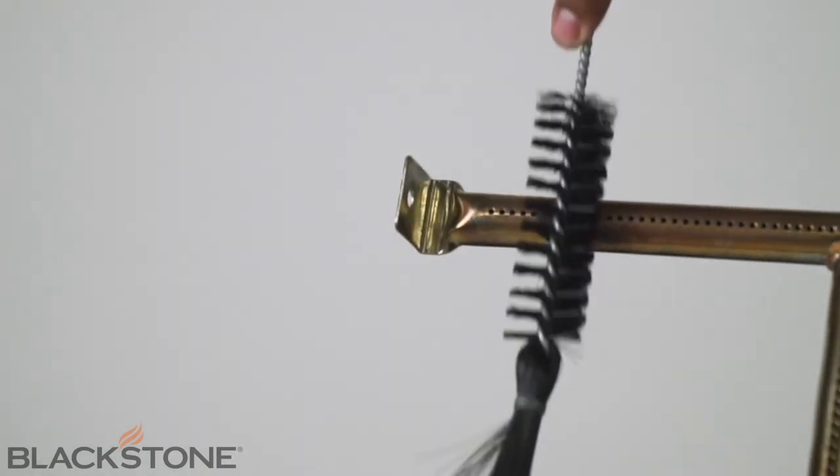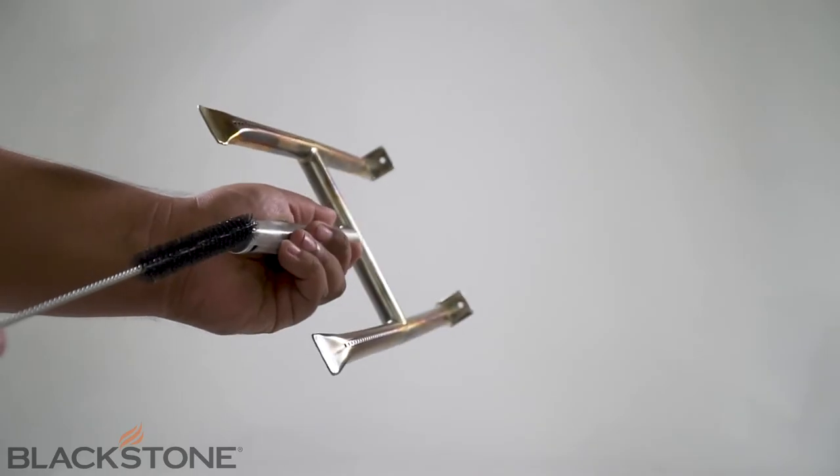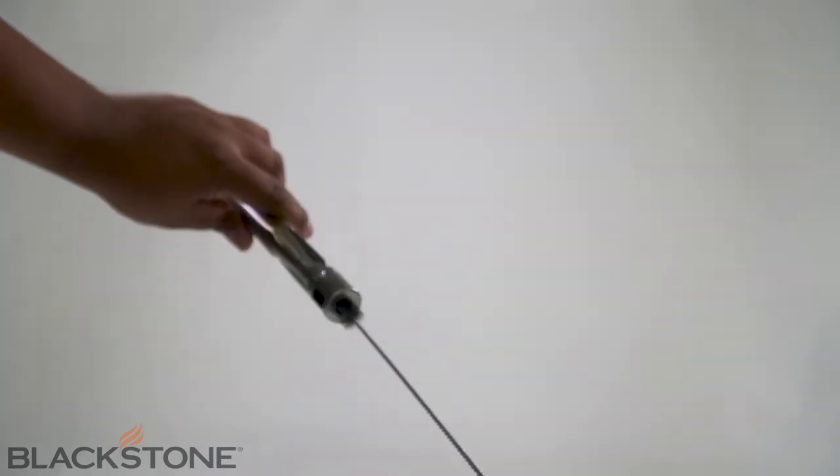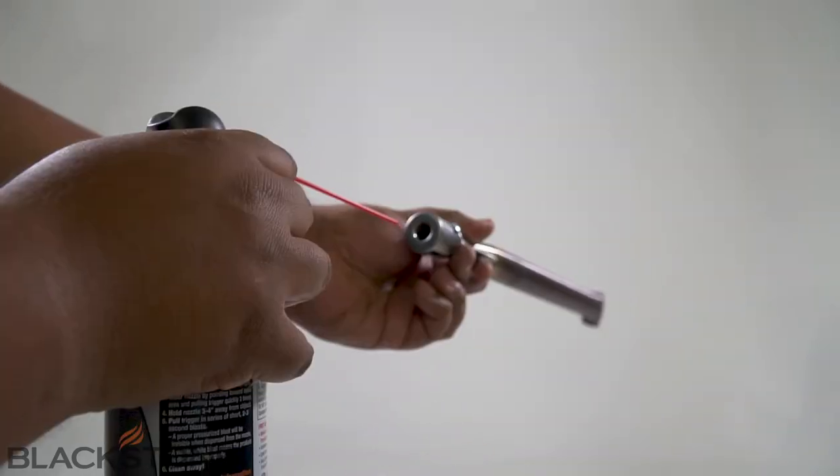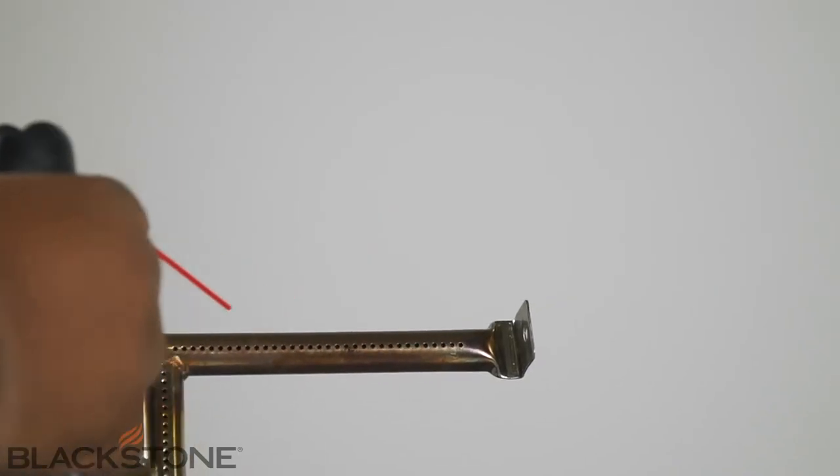Once the burner tube has been removed, use your bottle brush or compressed air to clean up any blockages that may be in the burner tube. Make sure the front area inside of the burner tube is clear of bugs or other debris. Otherwise, the gas flow can become blocked, which is potentially dangerous.